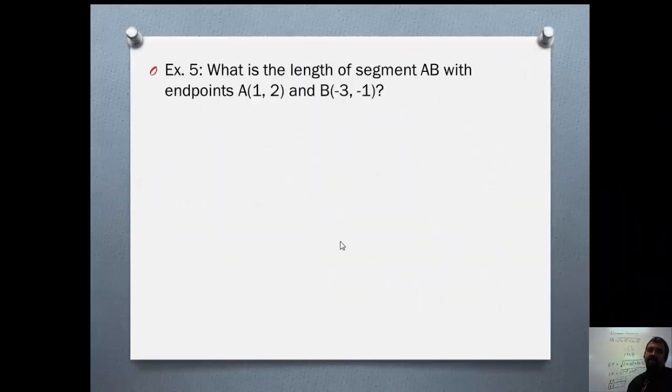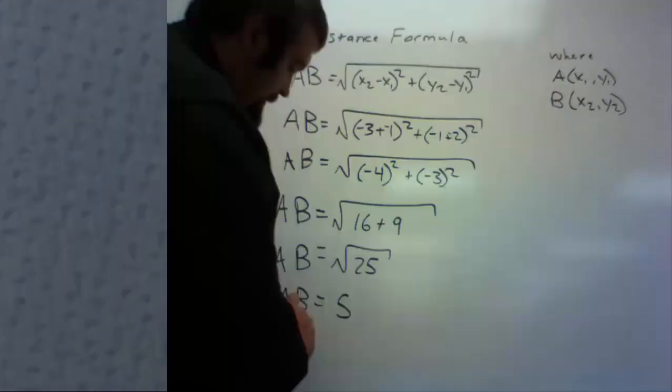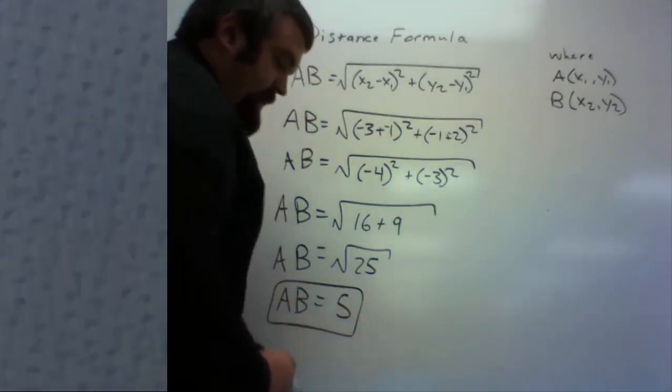For example 5, they are just again asking us to do this problem, but instead they're using different points. So if A is 1, 2, and B is negative 3, negative 1, make sure you plug it in correctly. I'm going to choose A to be X1, Y1, and B to be X2, Y2. So the length of segment AB is 5, and we found this using the distance formula.